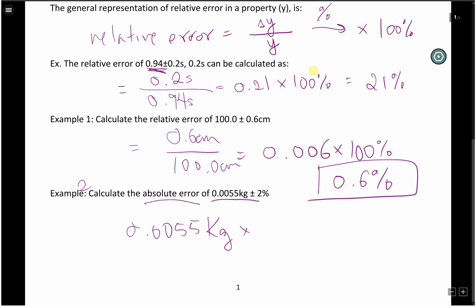which is 2%. But don't forget, we need to convert this 2% to a decimal place, which is 0.02. So we need to multiply by 0.02, which then gives us an error of ± 0.00011 kilograms.